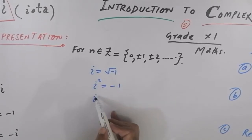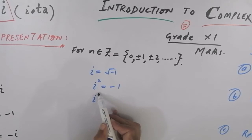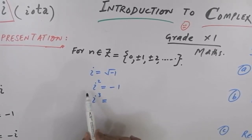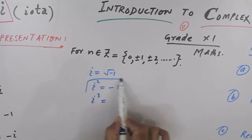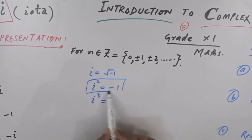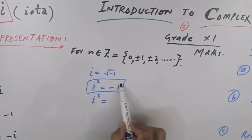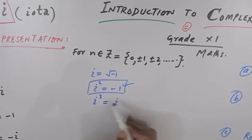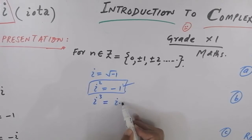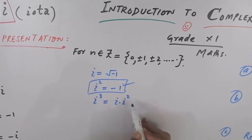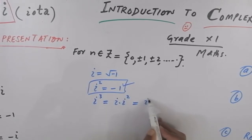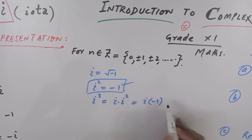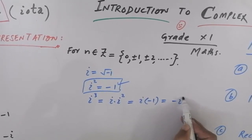I am talking about integral powers of IOTA. The value of IOTA squared is minus one, and the real number of IOTA cube is minus one. So IOTA cube becomes minus IOTA.